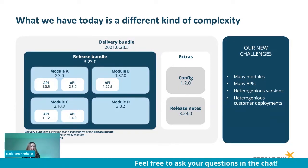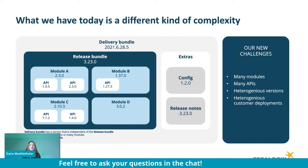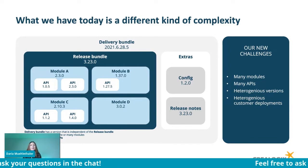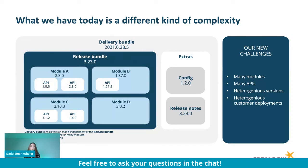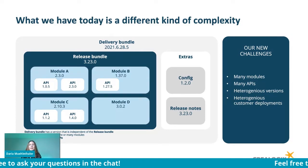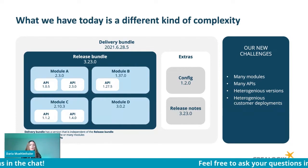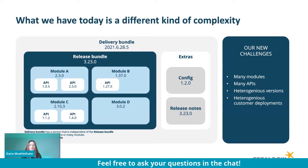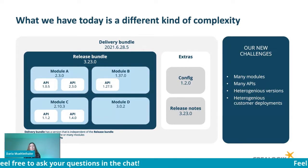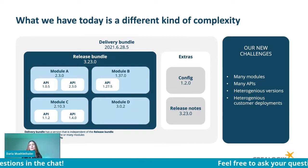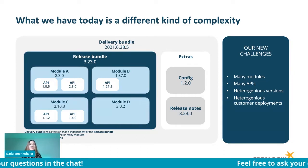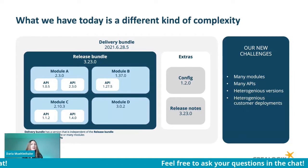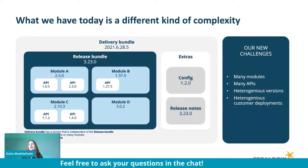Consider a delivery bundle and a release bundle, both with different versions, where modules have different versions and may have one or several APIs, each also with different versions. Previously, customers might ask what version a certain module or product or partner integration is on, and that wasn't always easy to find out. You had to find someone in the company with access, receive the information — the whole process was long and not easy for product managers or project managers.